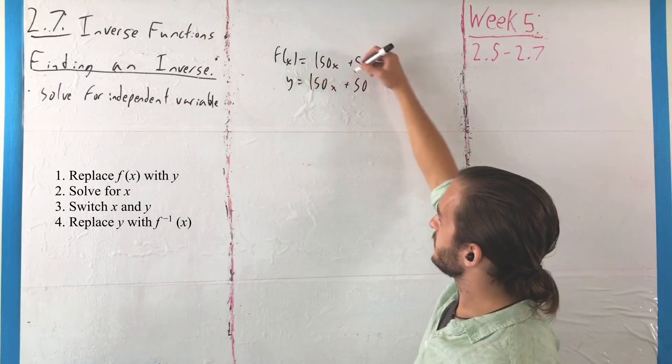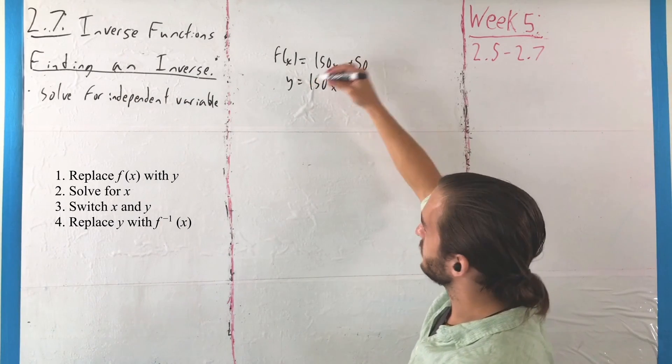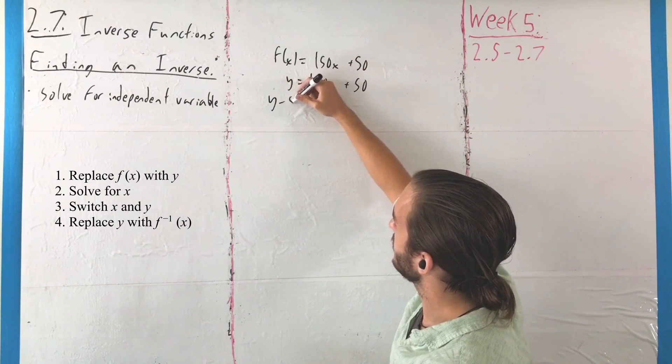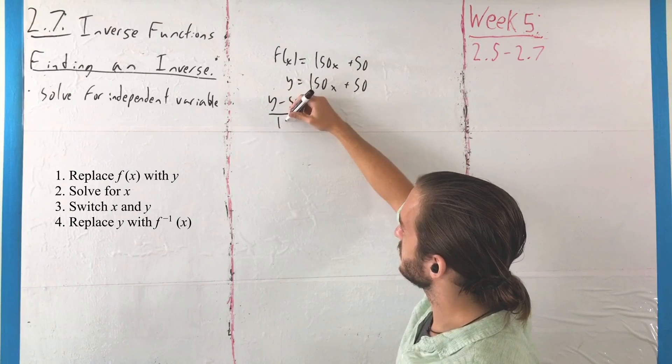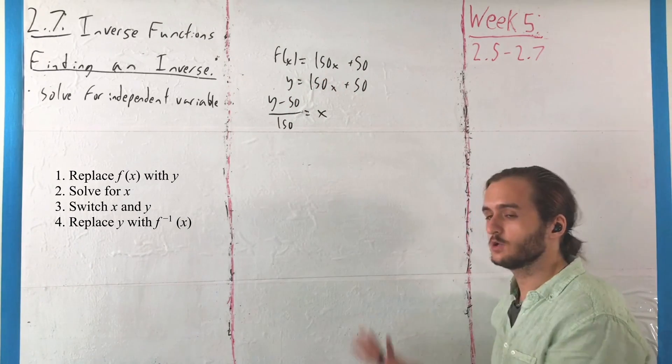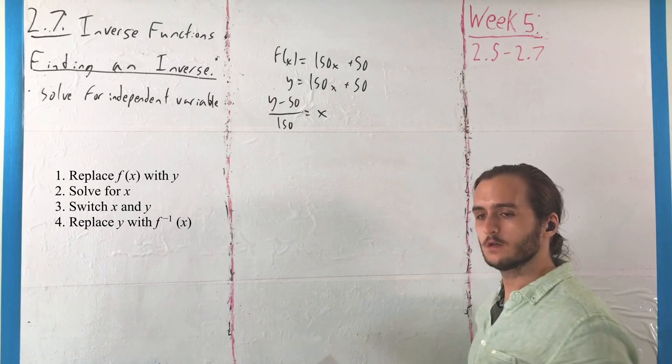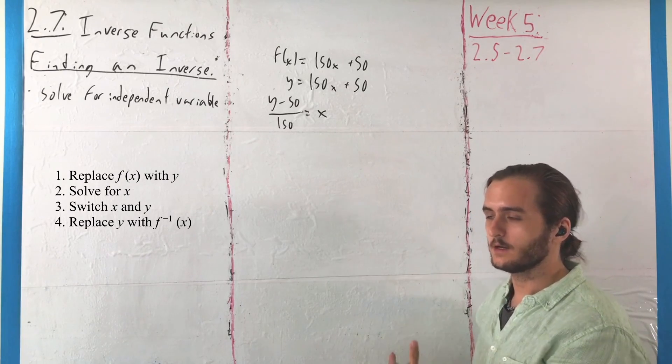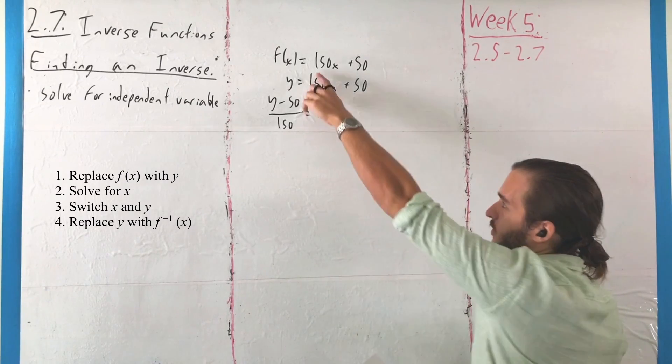And that would mean subtracting over 50 divided by 150, you get y minus 50 over 150 is equal to x. And this is actually where I'd say that you're done, because at this point you have identified the function that undoes our original function.